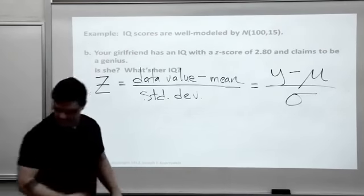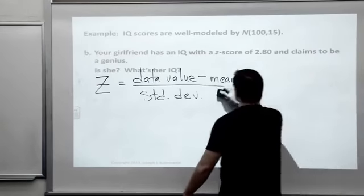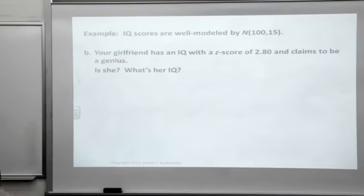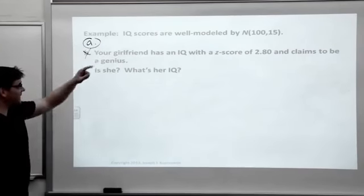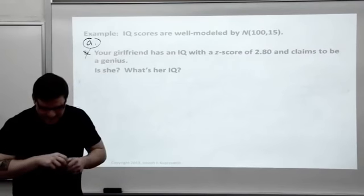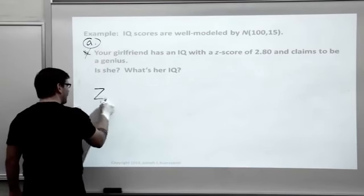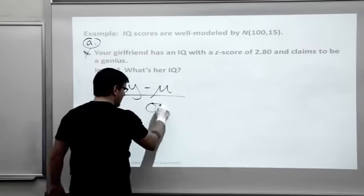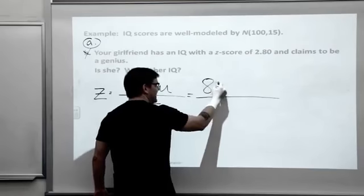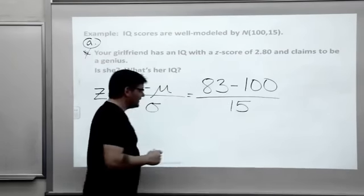Let's practice. IQ scores are well modeled by that normal model with a mean of 100, standard deviation of 15. Part A: what is the Z-score for someone with an IQ of 83? And is that unusually below average? What is the Z-score? The formula again is Z equals Y minus mu over sigma. We'll take 83, subtract off the average IQ, the mean is 100, divide by 15.